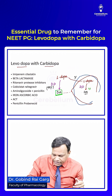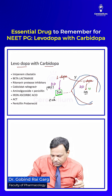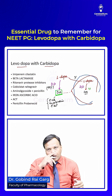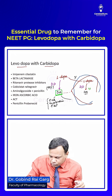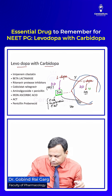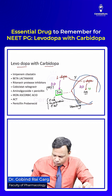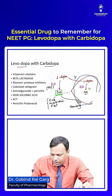The 99% dopamine formed outside the brain causes significant side effects. This peripheral dopamine can cause tachycardia, palpitations, and hypotension — and at high doses, hypertension as well. It can also act on the chemoreceptor trigger zone (CTZ), resulting in vomiting. All these side effects occur because of peripherally formed dopamine.